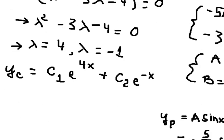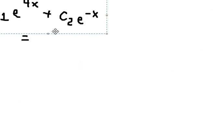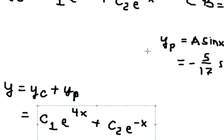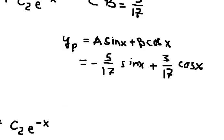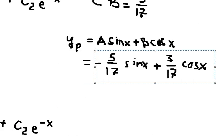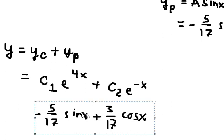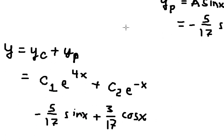Now we have the final answer. yc is the complementary solution and yp is the particular solution. The general solution is y equals yc plus yp. This is the end. Thank you for watching.